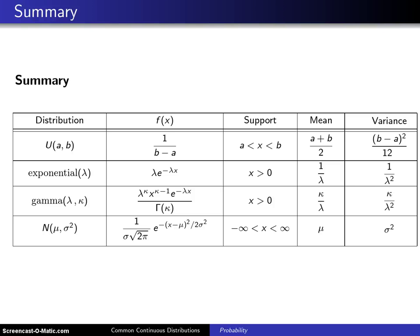Here is the summary of the continuous distributions introduced in this chapter. There were four of them. The first was the uniform distribution. Here is its probability density function, its support values, its population mean, and its population variance.